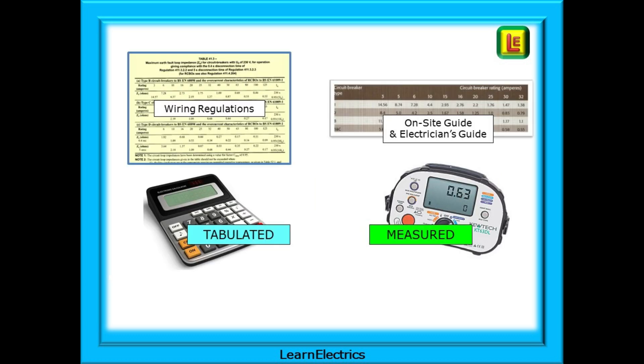Do try and remember this. They will try and catch you out with it in exams. The wiring regulations, the big brown book, gives us tabulated values of ZS. The on-site guide gives us measured values, those that we measure with our test meters. And get them the wrong way around and your schedule of test results will not look right either.